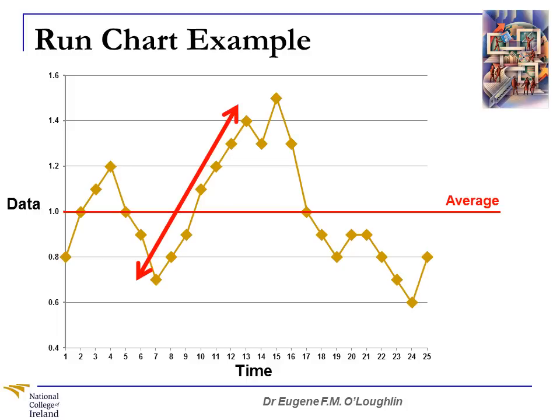Another thing you can do is look for trends. Here's a trend of seven values in a row increasing. This violates what we call the seven run rule, which states that if there are seven or more values either increasing or decreasing, it means that there is a problem with the process. We can also look and see if there's a significant number of values either above or below average. In the bottom right-hand corner here, we can see that there are eight values in a row which are below average — a strong indicator that there's a problem with performance.